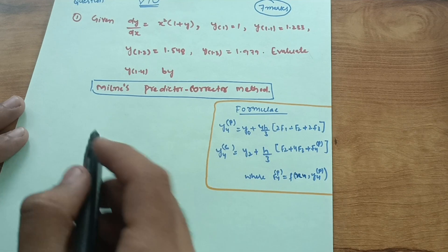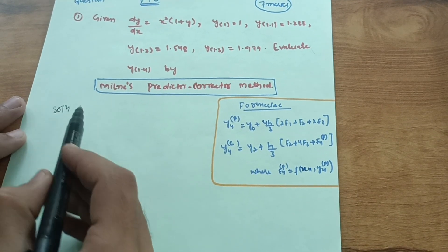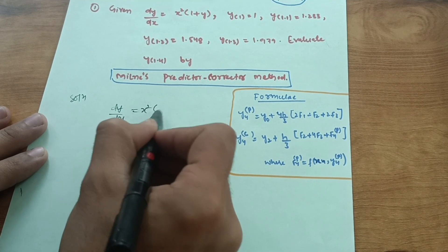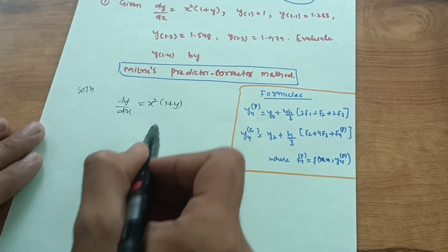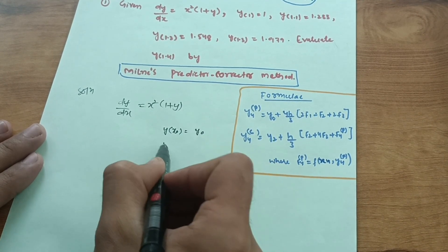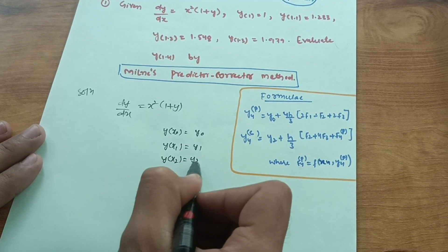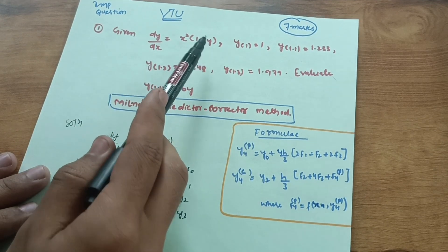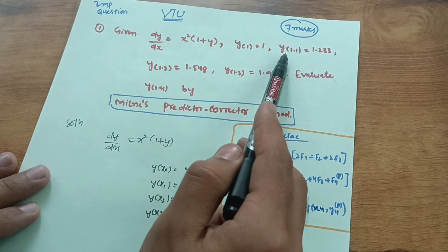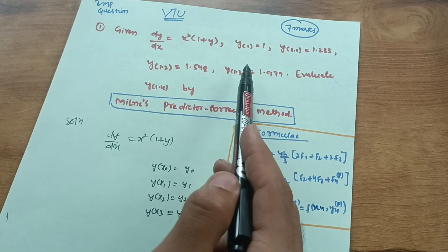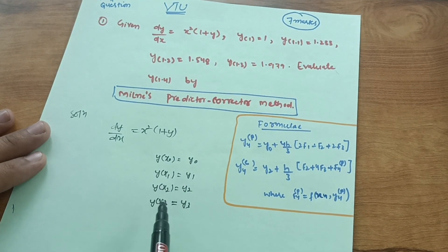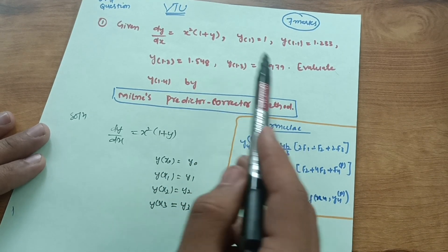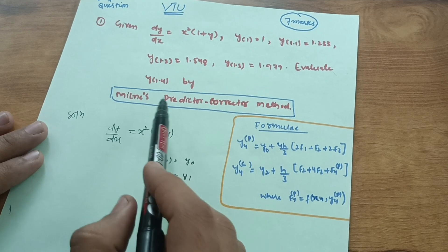Let me solve the question. The differential equation is dy/dx = x²(1 + y), with initial conditions y(x0) = y0, y(x1) = y1, y(x2) = y2, y(x3) = y3. Given: y(1) = 1, y(1.1) = 1.233, y(1.2) = 1.548, y(1.3) = 1.979. We need to evaluate y(1.4) by Milne's predictor-corrector method.